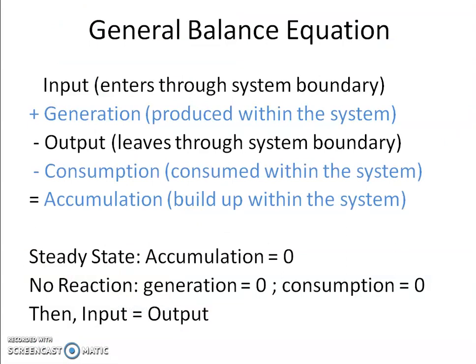The general balance equation takes the form: input of material through the system boundary, plus generation (that is, material produced by any reaction), minus output (the outgoing stream), minus consumption (material consumed due to the reaction). Taking care of the proper sign convention, this comes out to be equal to accumulation — the buildup within the system.